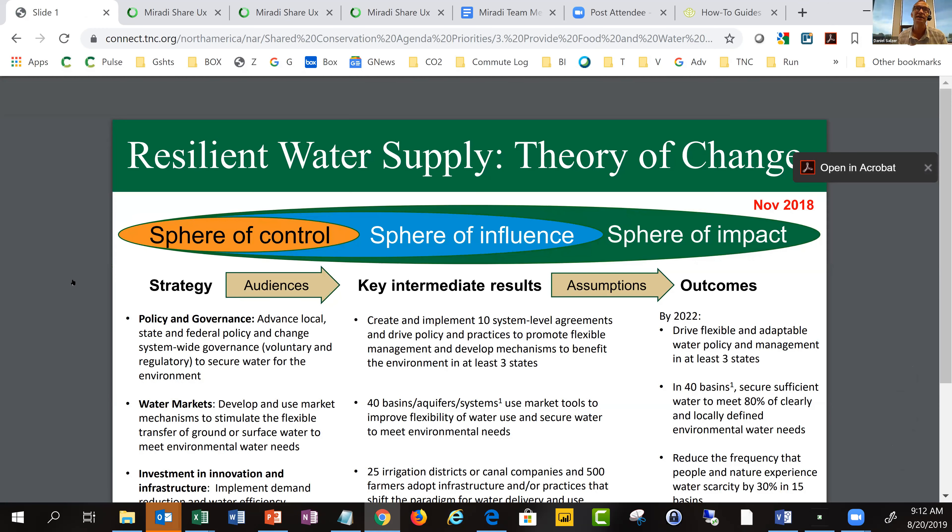If you scroll down under the strategy files, you'll see a link to the theory of change. I just wanted to make sure you're all aware of how to find all of the priority strategies. They all have that capability in the shared conservation hub.